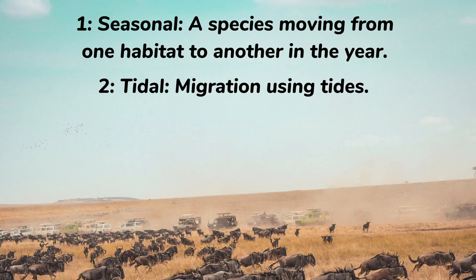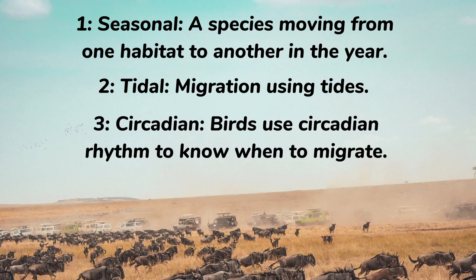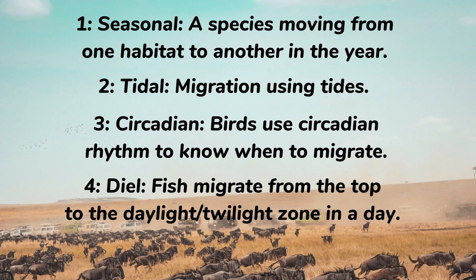Other classifying terms include tidal migration — using tides; circadian migration — birds using their circadian rhythm to know when to migrate; and diel migration — 'diel' means 24 hours, where fish migrate from the deep sea up to the daylight or epipelagic zone within a day. There are also some migration terms based on how animals behave.